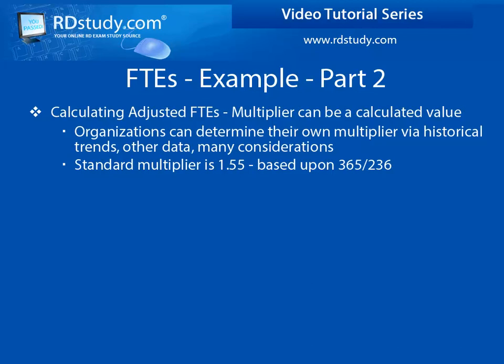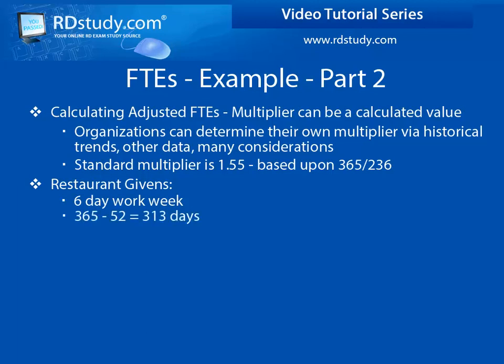But this value is also based upon a 7-day work week. Since our restaurant is only open 6 days per week, we could determine our own multiplier by removing the 52 days that we are closed from the yearly value of 365 to get 313 days. Then we could divide by 236 to get a multiplier value of 1.33. But this is not really effective, as there are more things to consider when trying to determine this value, but we wanted to show you why or how that number could be changed in very simple terms.